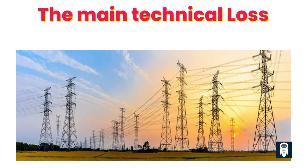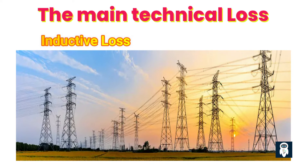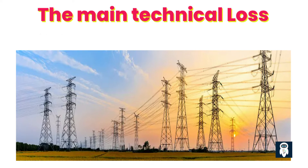The main reasons for technical loss: Resistive losses occur due to the resistance of electrical conductors such as wires and cables, which convert some of the electrical energy passing through them into heat. These losses increase with the length and thickness of the conducting material and can be minimized by using materials with lower resistance or by optimizing the design of the network. Inductive losses are caused by the inductive components present in electrical networks such as transformers and motors, which store energy in a magnetic field and release it back to the system, resulting in energy losses.